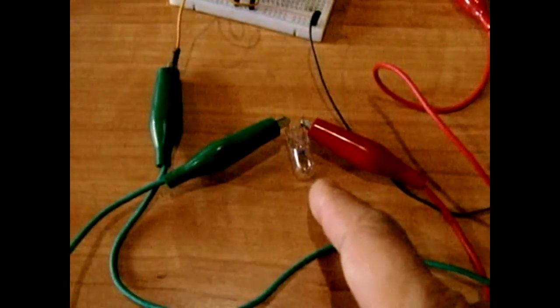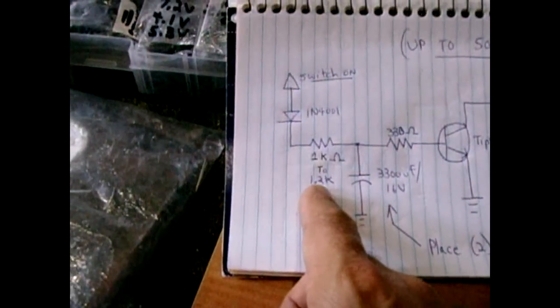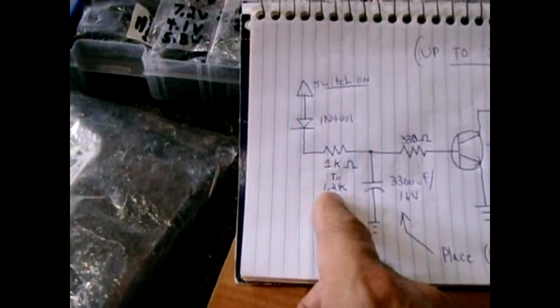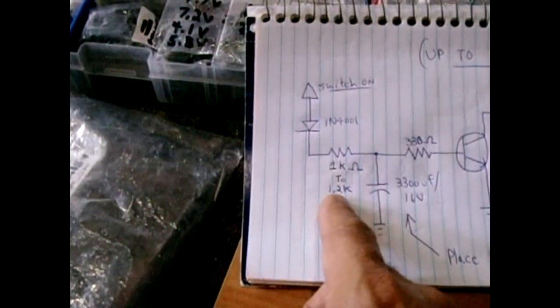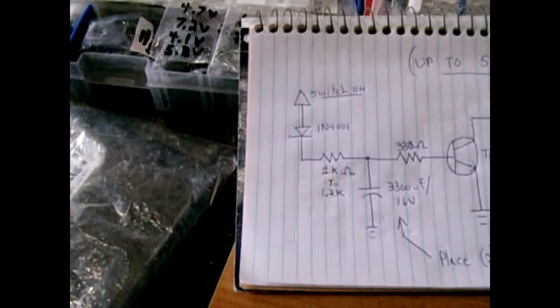Now if you want it to take a little longer to get the bulb to go fully bright, you can play around with the value here. Make that 4.7k that I switched it to, you could raise it to maybe a 5.6k. And you could also increase the value of this capacitor to make it take longer to have the light go to full brightness.